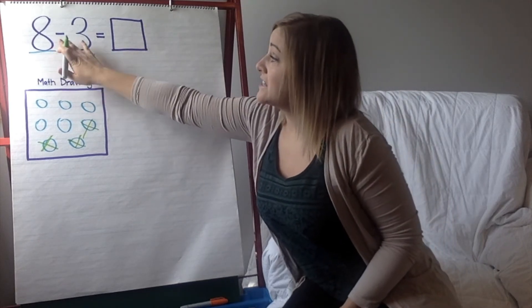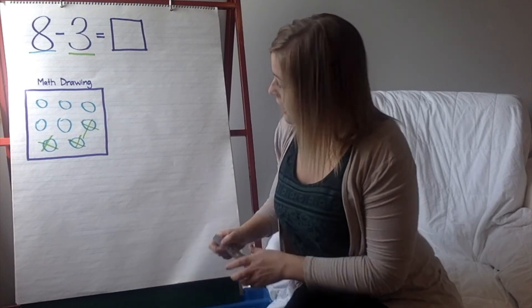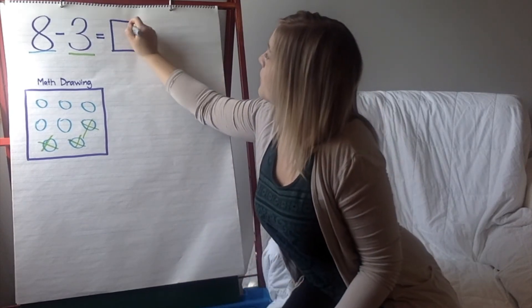5 circles are left. So, that means 8 minus 3 equals 5.